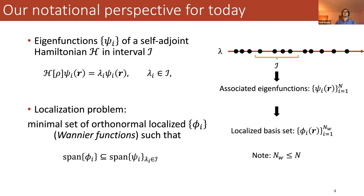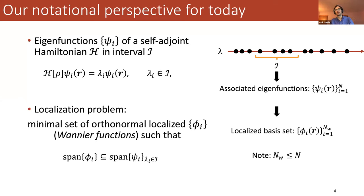There's a picture of some interval of the real line where the eigenvalues we care about live. The localization problem, in the simplified setting we're in, is that we want to find a minimal set of orthonormal localized functions — the phi's — such that their span is within the span of psi. We may have fewer phi's than psi's, and that's going to be the entangled case. We want to construct a localized basis set of N_W Wannier functions, where N_W is less than or equal to N.